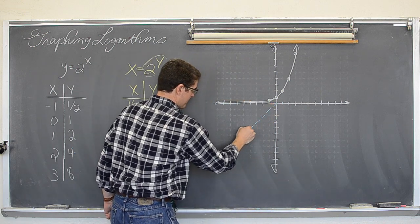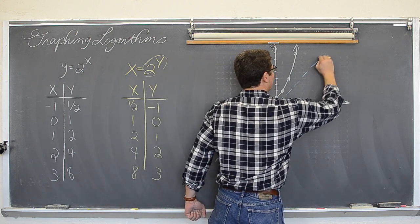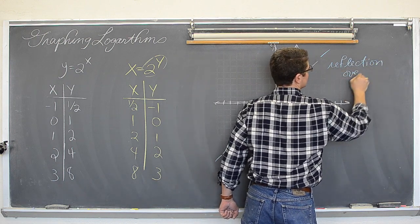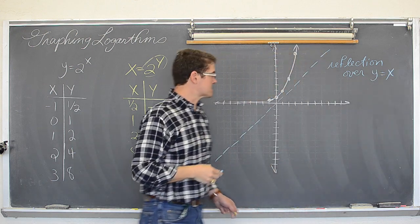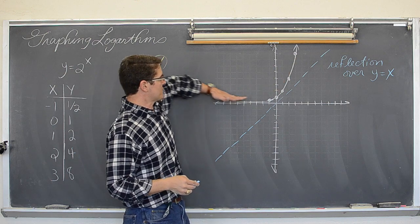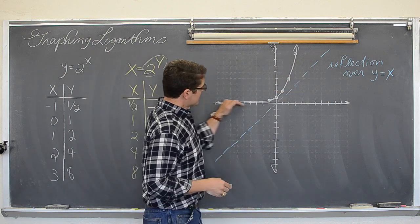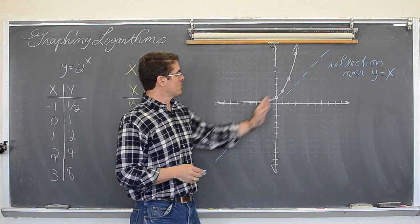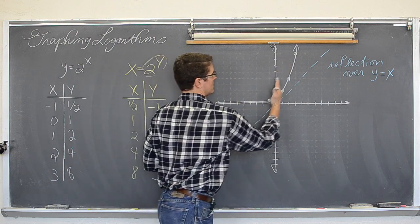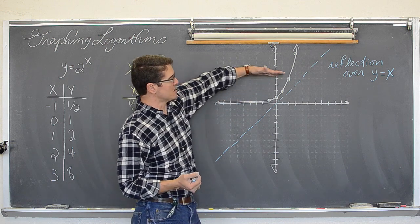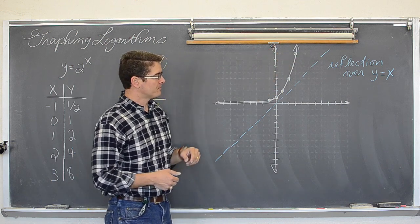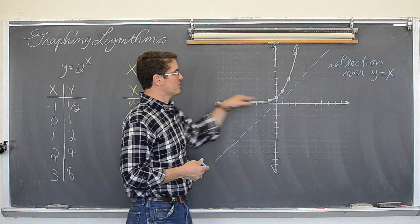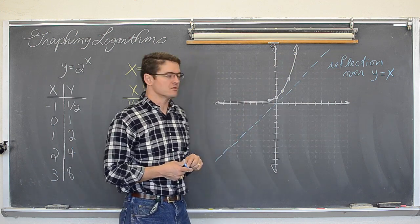Oh, now I remember what I wanted to say. When you graph an inverse, it is a reflection over y equals x. This white graph, this y equals 2 to the x exponential growth function, will have an inverse function because not only is this a function itself that would pass the vertical line test, but it would also pass the horizontal line test. This is a one-to-one function. If you are not sure about one-to-one functions, go to my search in the upper right hand corner and type in 'one to one' and you will see a video about that.